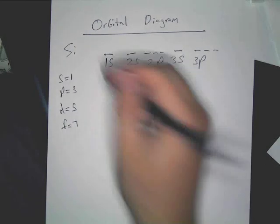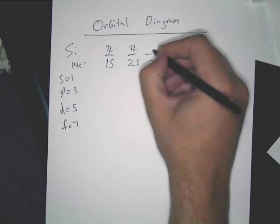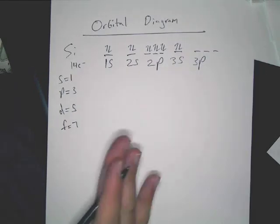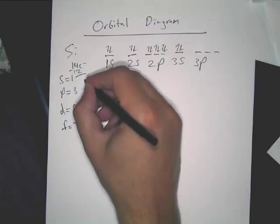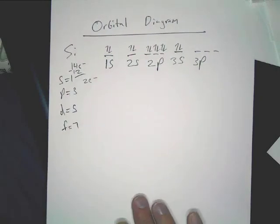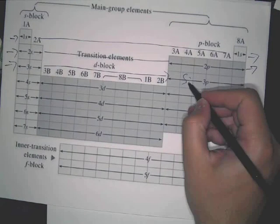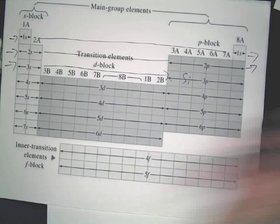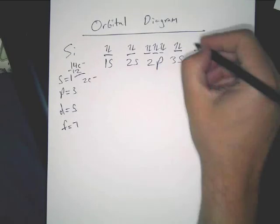We're putting in 14. What I suggest you do is fill up everything until the final one. If you add that all up, you'll see we've used 12, so there will be two electrons left over. You can just count the number of spaces into the p block silicon is — 1, 2 — and that's how many electrons go in the last spot. So you fill in 2.